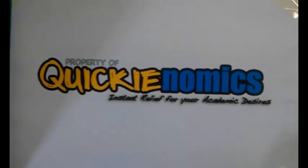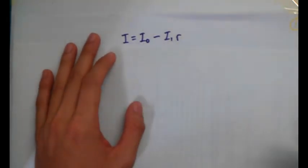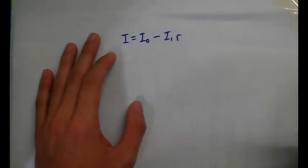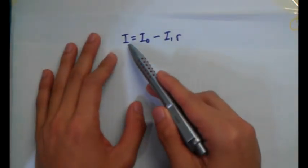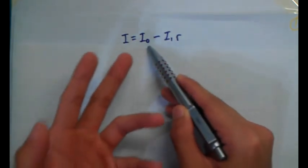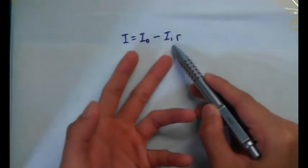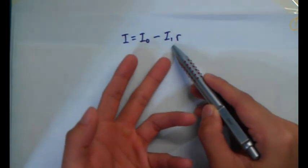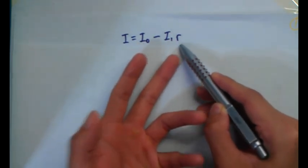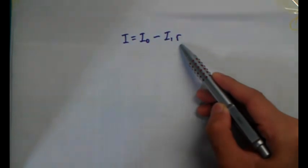Let me introduce the investment function. We have I, which stands for investment, equals autonomous investment minus the sensitivity to interest rates multiplied by r. The small letter r stands for the real interest rate.